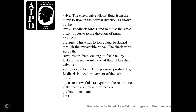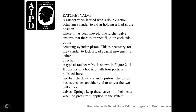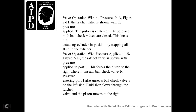Ratchet Valve. A ratchet valve is used in a double-action actuating cylinder to aid in holding a load on the piston wherever it has been moved. The ratchet valve ensures fluid on each side of the actuating cylinder is under sufficient pressure, locking the cylinder against movement in either direction. A typical ratchet valve shown in figure 2-11 consists of a housing with four ports, two ball check valves, and a piston. The piston has an extension on either side to unseat the two ball check valves. Springs keep the valves on their seats when no pressure is applied. With no pressure applied, both ball check valves are closed, locking the actuating cylinder in position by trapping all fluid in the cylinder. With pressure applied to port 1, the piston is forced to the right, unseating ball check valve B; this also unseats the ball check valve on the left side, allowing fluid to flow through the ratchet valve and the piston to move to the right.